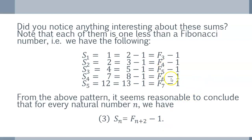And we can kind of guess that formula if we look at this pattern. If you notice that S1 was 1, that happens to be 2 minus 1, that 2 is F3. So, S1 is equal to F3 minus 1. S2 turns out to be equal to 3 minus 1, which is F4 minus 1. S3 is 5 minus 1, which is F5 minus 1. S4 is 8 minus 1, which is F6 minus 1. S5 is 13 minus 1, which is F7 minus 1.